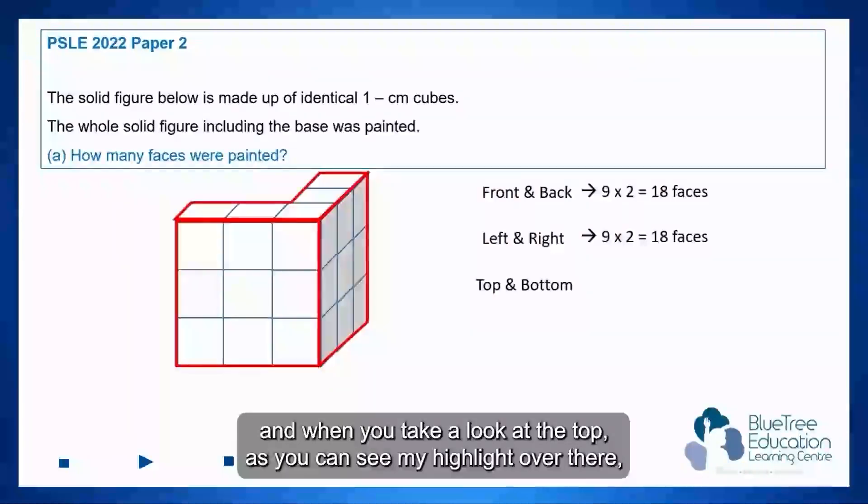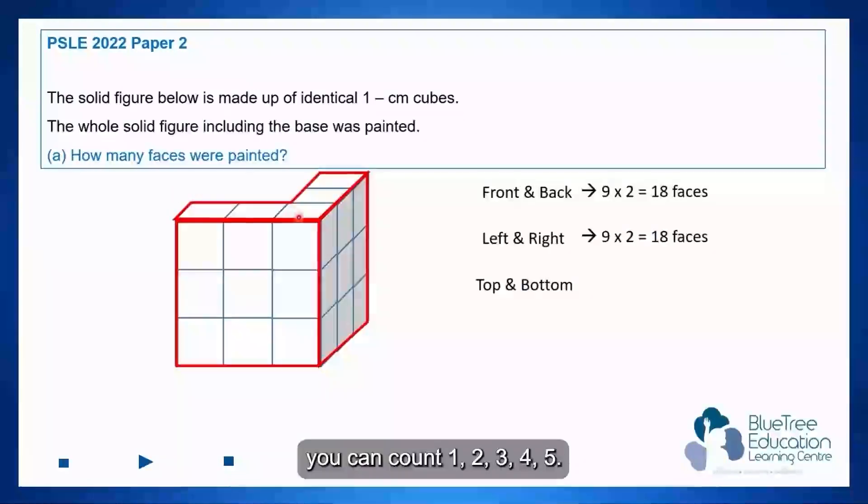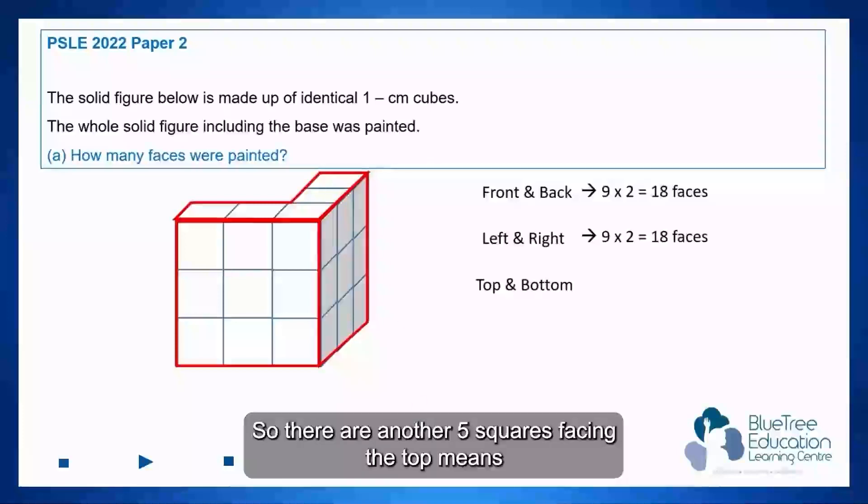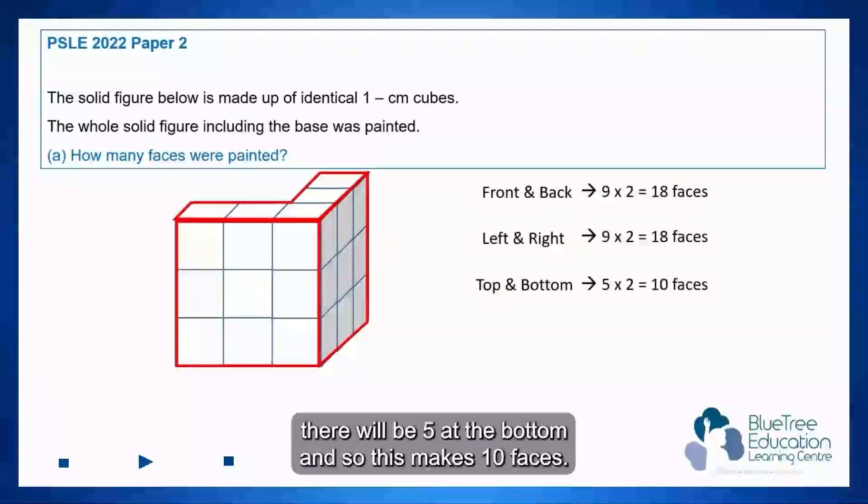And when you take a look at the top, as you can see my highlight over there, you can count one, two, three, four, five. So there are another five squares facing the top means there will be five at the bottom. And so this makes 10 faces.